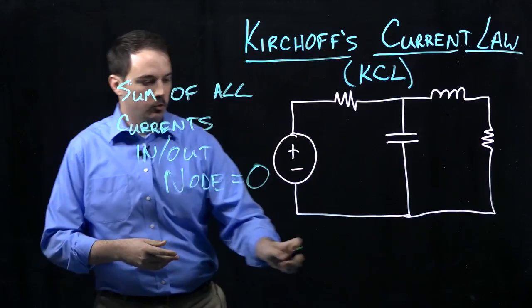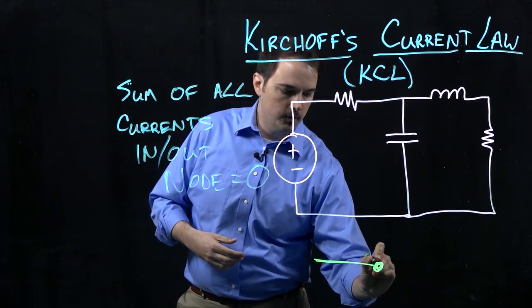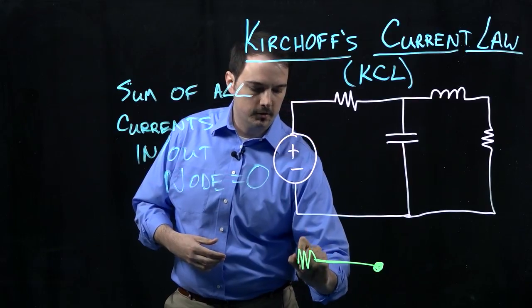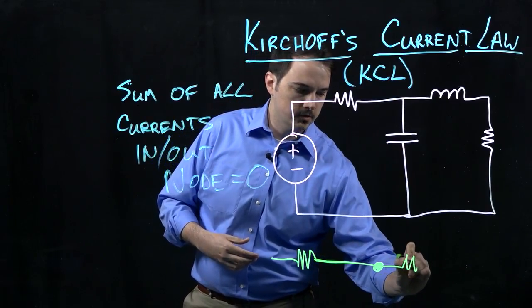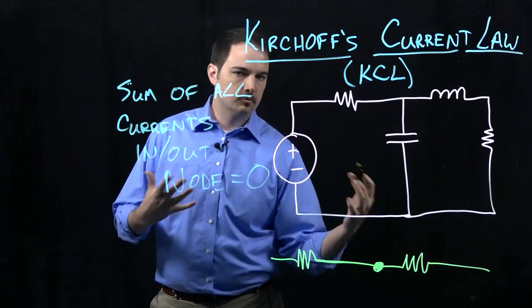To start off with a simple idea, if we just think of a wire here, we have a node. Even if we put in a resistor here tied to another resistor, as you're probably already aware, the current going through each of these resistors would have to be the same.